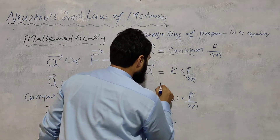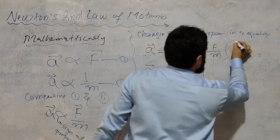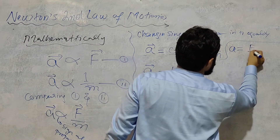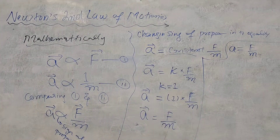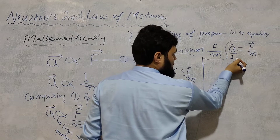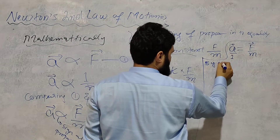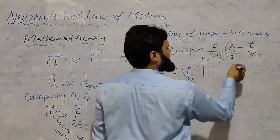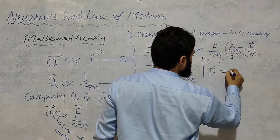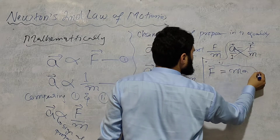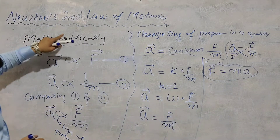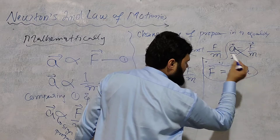So acceleration is equal to F divided by m. By cross multiplication: F equals mass multiplied by acceleration. That is F = ma. This is the mathematical form of Newton's Second Law of Motion: force equals mass times acceleration.